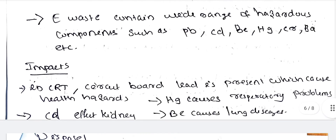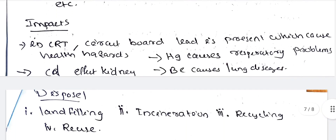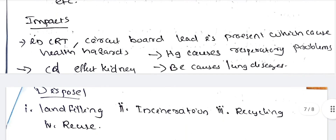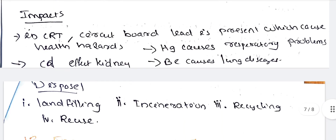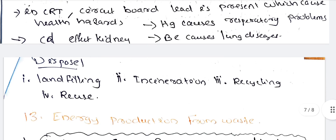In CRT circuit boards, lead is present which causes health hazards. Mercury causes respiratory problems, cadmium affects kidneys, beryllium causes lung diseases. Disposal methods include landfilling, incineration, recycling, and reuse.